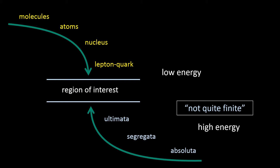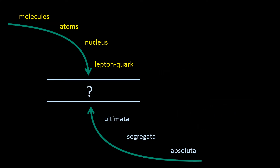So what do we know? Well, we know that for the standard model to work, this region of interest needs to be filled with something called a condensate of charge. What's a condensate and what kind of charge? We'll get to that, but first let's introduce the ultimaton.